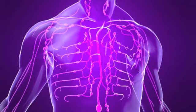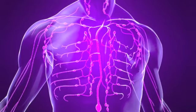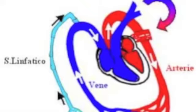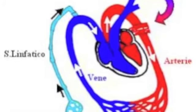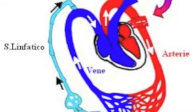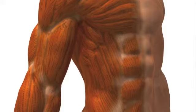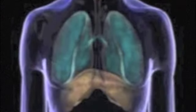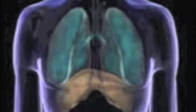The lymphatic system, unlike the blood circulation system, does not have a heart that pumps fluid through it. Instead, lymphatic vessels are activated through muscle movement, exercise, and deep breathing. The diaphragm acts as a regulator of these fluids and their pressure.